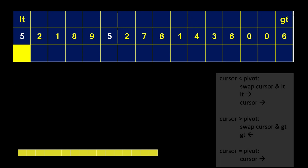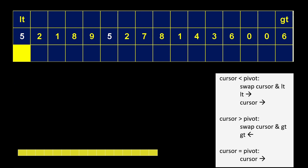So let's talk about how we actually do the partitioning — we do that by following these rules. We always take a look at the number at the cursor and compare it with the pivot. There are three possibilities: either the number at the cursor is less than the pivot, or it's greater than the pivot, or it's equal to the pivot. Depending on which of those cases we're in, these rules tell us what we need to do. Right now the cursor is at the pivot, which means the cursor equals the pivot, so the only thing we need to do is move the cursor to the right.